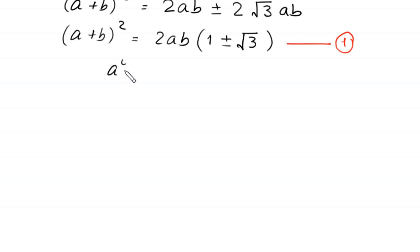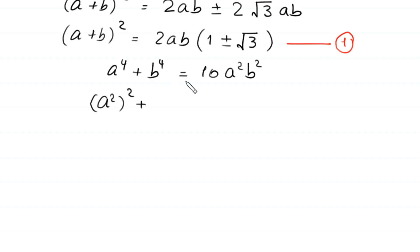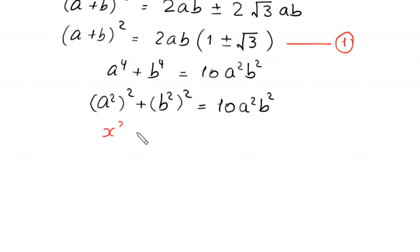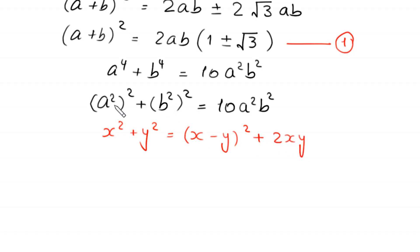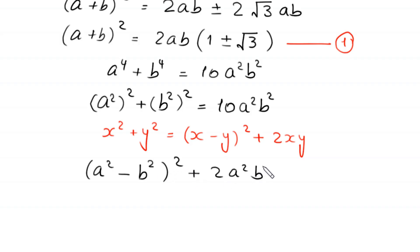From the original equation, a to the power 4 plus b to the power 4 equals 10 a squared b squared, we rewrite using the identity x squared plus y squared equals (x minus y) whole squared plus 2xy. The left hand side becomes (a squared minus b squared) whole squared plus 2 times a squared b squared equals 10 times a squared b squared.